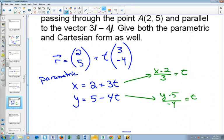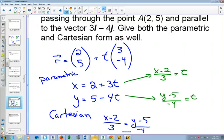And if we wanted to find our Cartesian forms, once we've solved for t, we can make them equal. x minus 2 over 3 equals y minus 5 over negative 4.